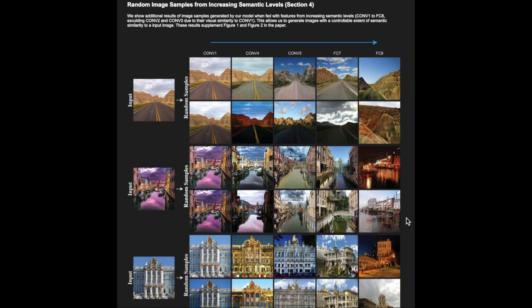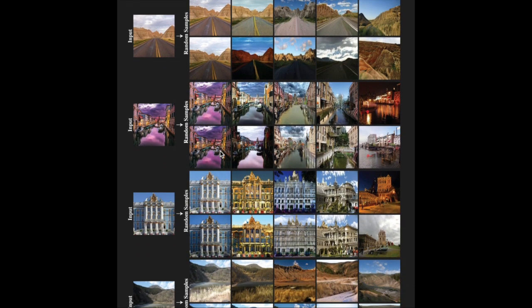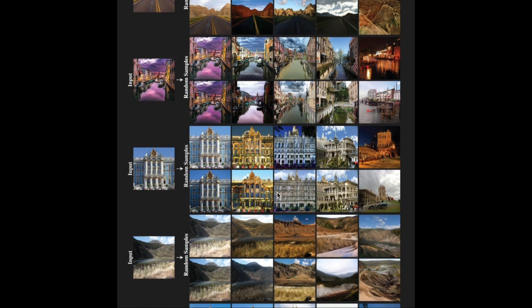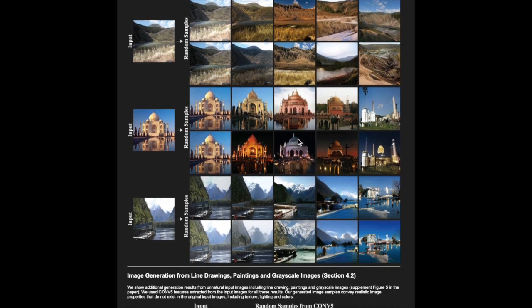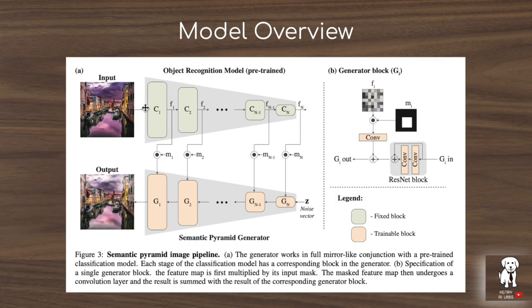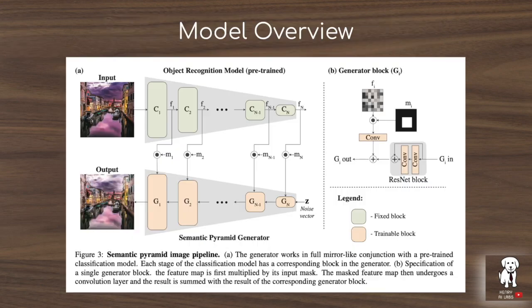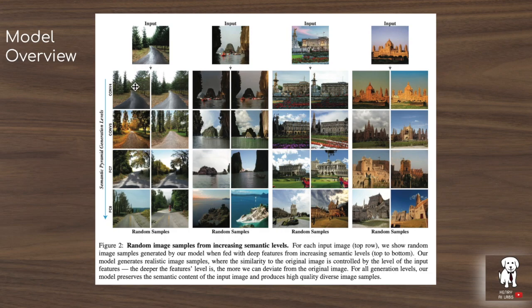These images further illustrate what happens with different random sample z vectors and different layers of the network used to take features from the pre-trained network and put them into the intermediate representation of the generator. It's easier to see without the animation: the difference between images with different layers and different z vectors shows the ability to generate different images despite the same pre-trained network embedding features going into the generator. When describing a specific convolutional layer, you take that layer's features and embed them into the generator, without using other features, illustrating what kind of features are contained in the pre-trained classification network and how they condition the resulting generated image.